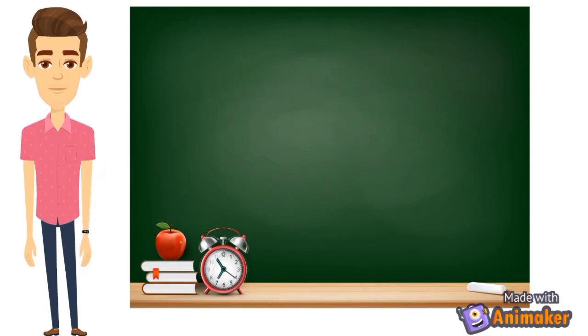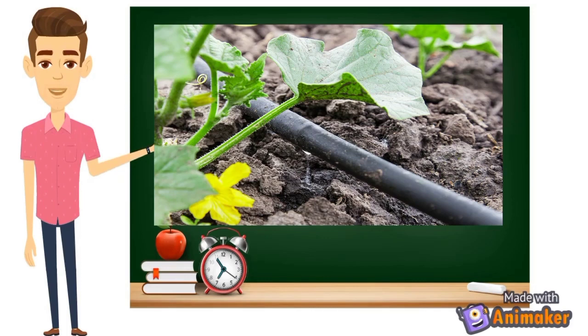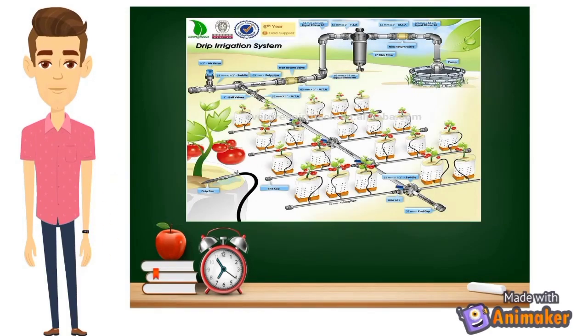This is an example of a drip irrigation system. We have a hose, a flexible hose that has holes where the water drips out. This is one example of a drip irrigation system.